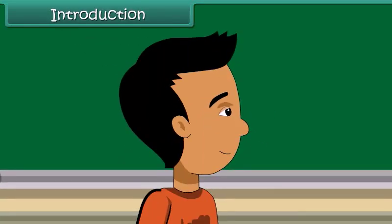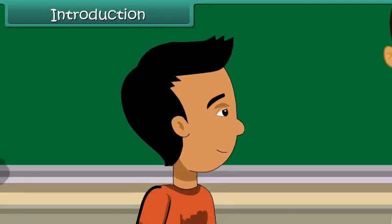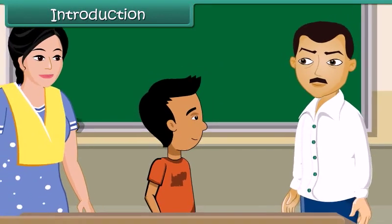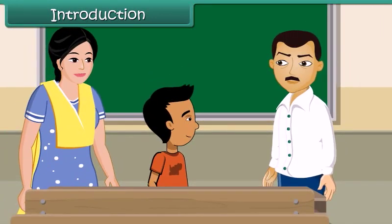Ramesh is a bright boy eight years of age. He studies in a government school. Today he has accompanied his mother to the parent-teacher meeting. The teacher has one complaint: Ramesh takes leave frequently. As a result, his class and homework are incomplete. If he continues to be irregular at school, he may have to repeat the class.